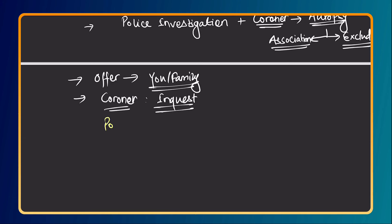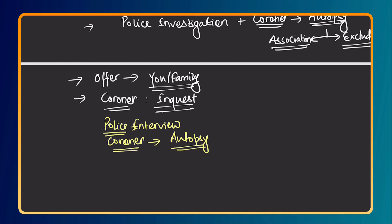To summarize the procedure: first, the police come and interview all family members involved in the child's care about the circumstances. Second, the coroner conducts their investigation, which includes an autopsy. The coroner's report will be available after some time — you can obtain the report for them, or the coroner's office will contact them directly. The coroner will also decide whether a formal inquest needs to be held, though this is generally not necessary in SIDS cases.